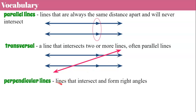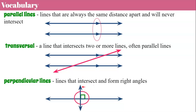Perpendicular lines are lines that intersect to form right angles. Here is a set of perpendicular lines, and this symbol — that little square box — tells you that they are 90 degrees. When lines intersect, if one angle is 90 degrees, then all four angles are 90 degrees.